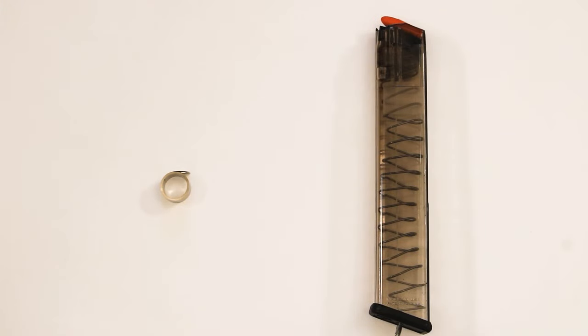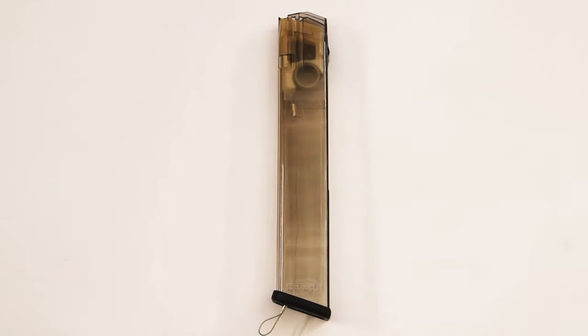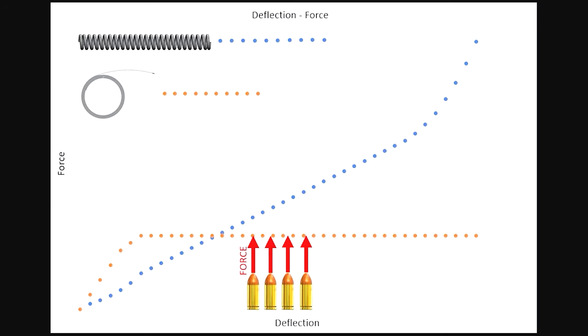Fortunately, such a product exists. It's our friend the constant force spring, and it can be built into firearm magazines. We constructed this mockup to demonstrate the superior functionality of a constant force spring in a magazine. A constant force spring can impart a comparable force to each cartridge as it leaves the magazine.